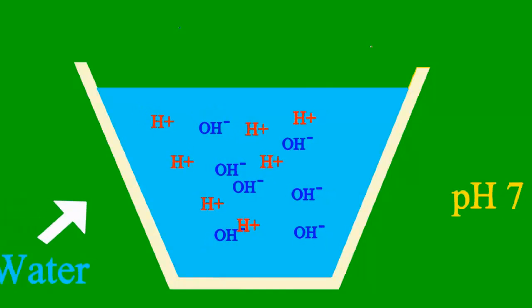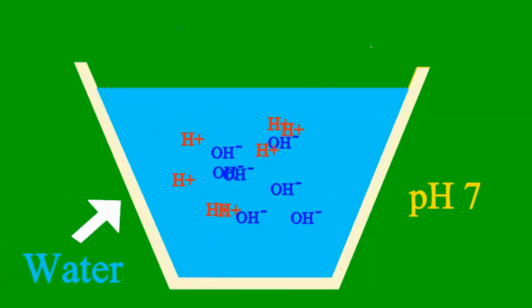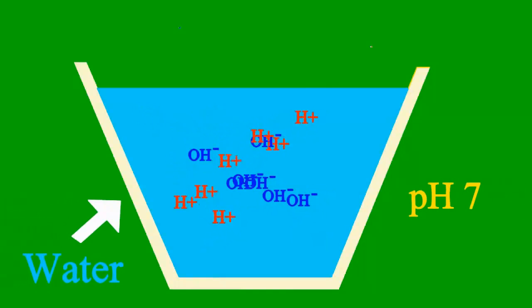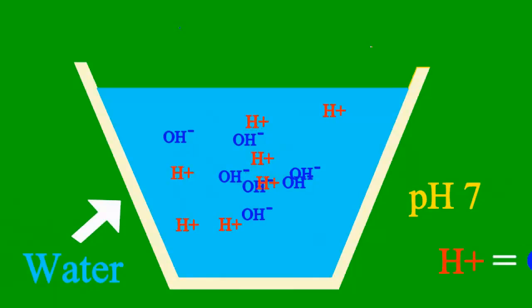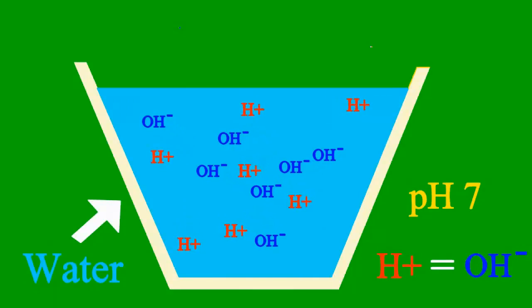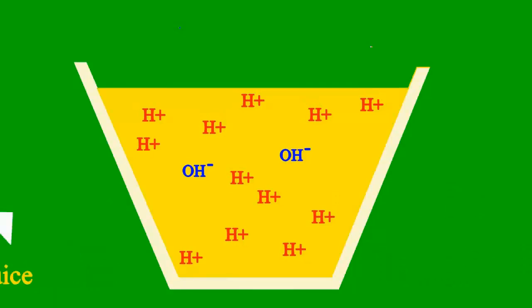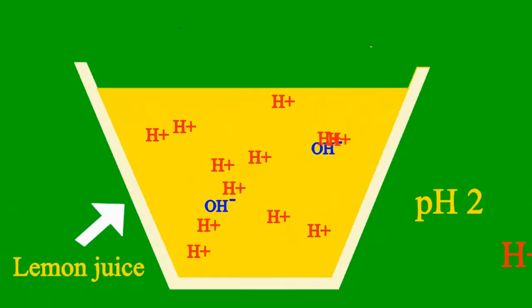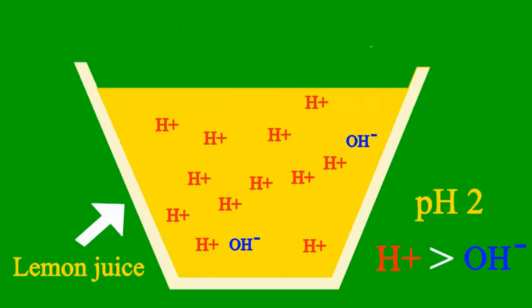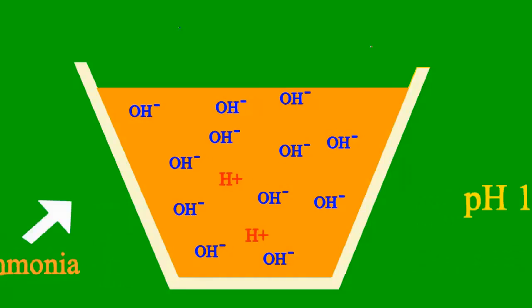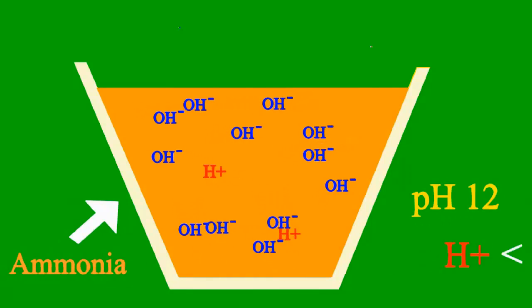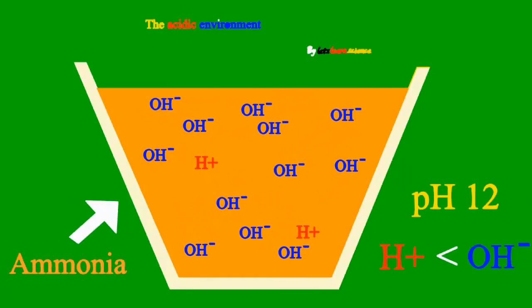When the pH is 7, it's a case where the sample is neither an acid nor base. But less than 7, it's an acid. More than 7, it's a base all the way.